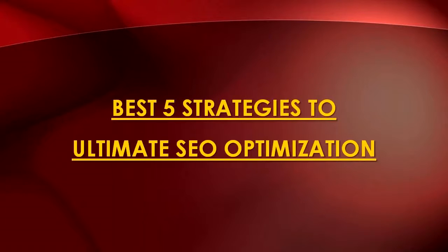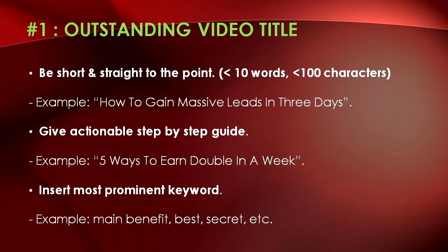Now let's get into the process of optimizing your YouTube SEO. These are the five best strategies to ultimate optimization. First up: outstanding video titles. When you upload and publish a video, make sure your video title is short and straight to the point. Customize it to less than 10 words and within 100 characters. For example, 'how to gain massive leads in three days.' This is to ensure clear communication to your audience.